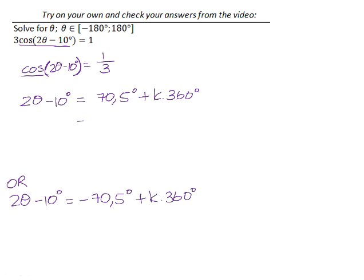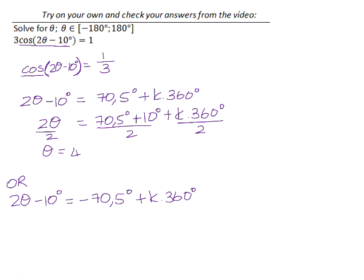All right, we haven't yet solved for theta though, so let's just go back to this first one. If we want to start getting theta on its own, we need to add 10 degrees to both sides. And then we need to divide everything by 2. So we need to divide all the terms by 2. So 70.5 plus 10 degrees is 80.5, and 80.5 divided by 2 gives you 40.25 degrees. Plus k times 360 divided by 2 is 180.